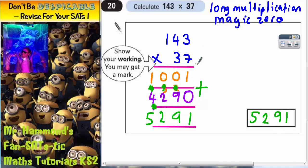So just to check what we did there. On the first line we did 143 times 7. On the second line we did 143 times 30. So we put the magic 0 in and then just multiply by 3. And on the final line we added everything together to get 37 lots of 143. Final answer 5,291.